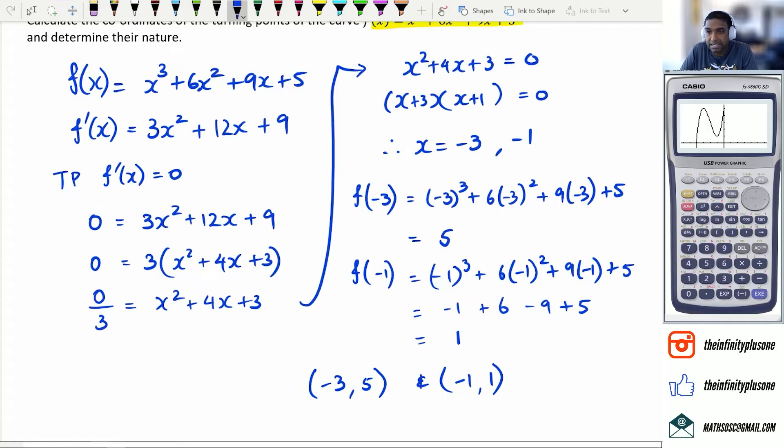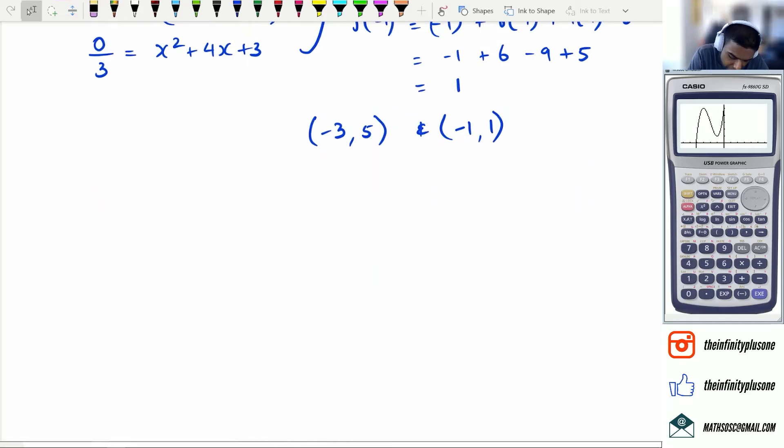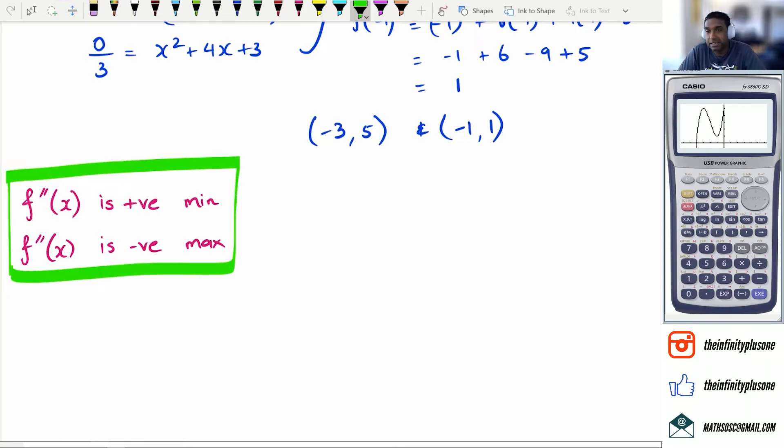Okay, so now we need to actually prove which one is maximum and which one is minimum. Now, the double differentiation rule is something you just need to remember. So I'm going to write this down here. If f''(x) is positive number, then the point is a minimum. And if f''(x) is negative, then it is a maximum value. So this little idea I've just written in the green box is something you just need to remember because you can just write it down as part of your statements.